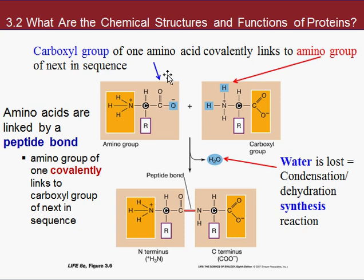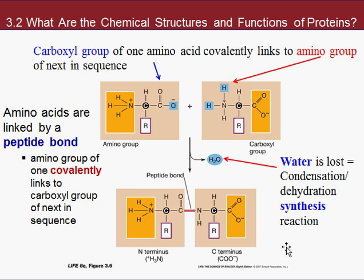When joining amino acids together to make a protein, we use a condensation or dehydration reaction — we lose a water molecule when linking one amino acid to another. That's synthesis. The two amino acids are then linked by a peptide bond, which is a covalent bond specific to proteins. For each macromolecule, know how they're held together: proteins are held together by peptide bonds — strong covalent bonds.